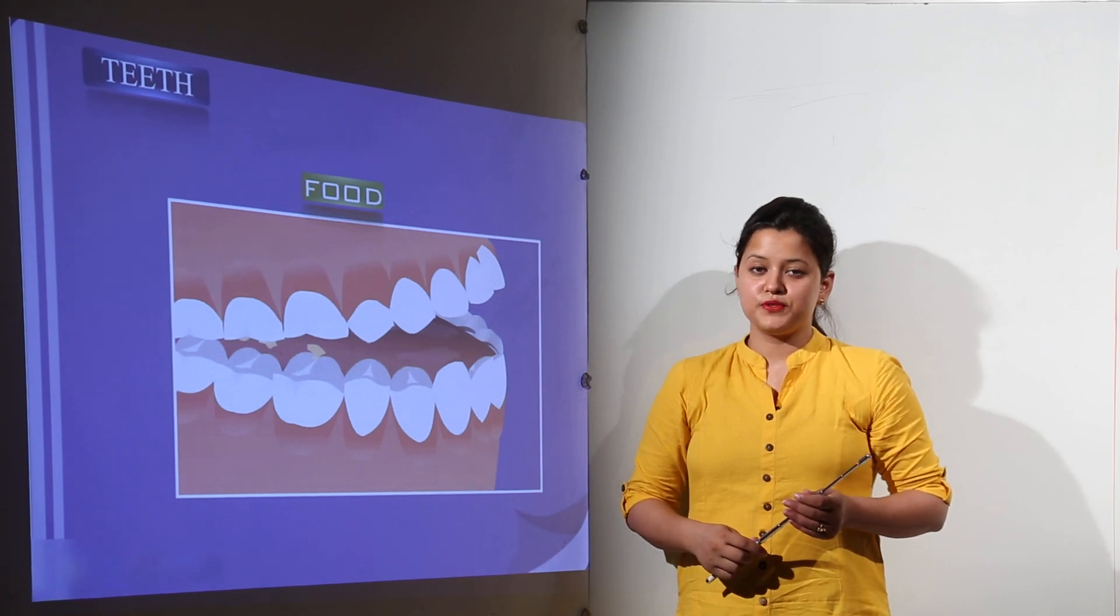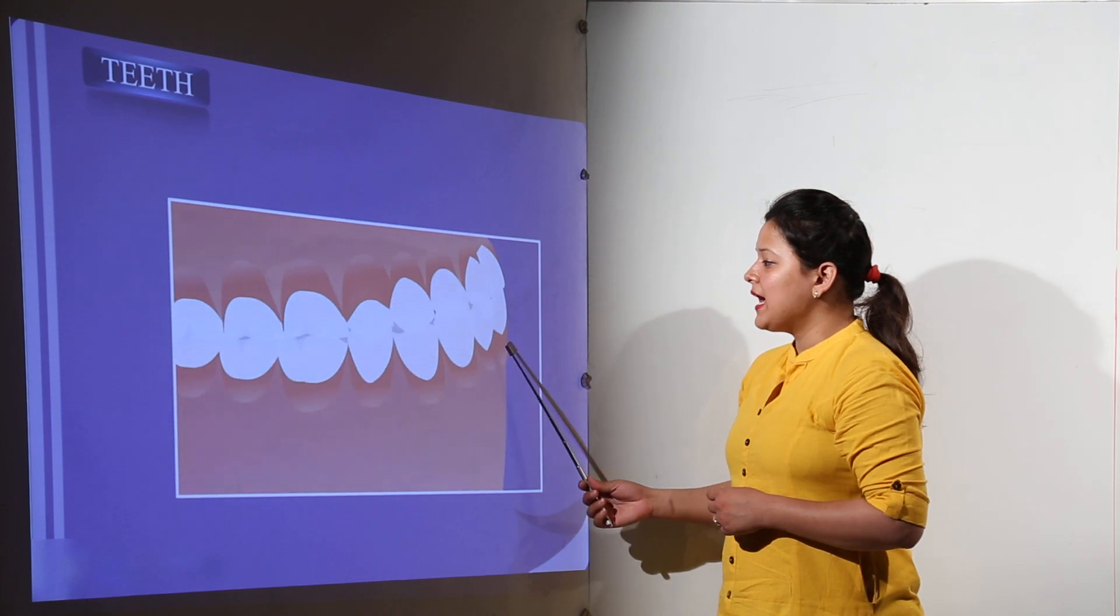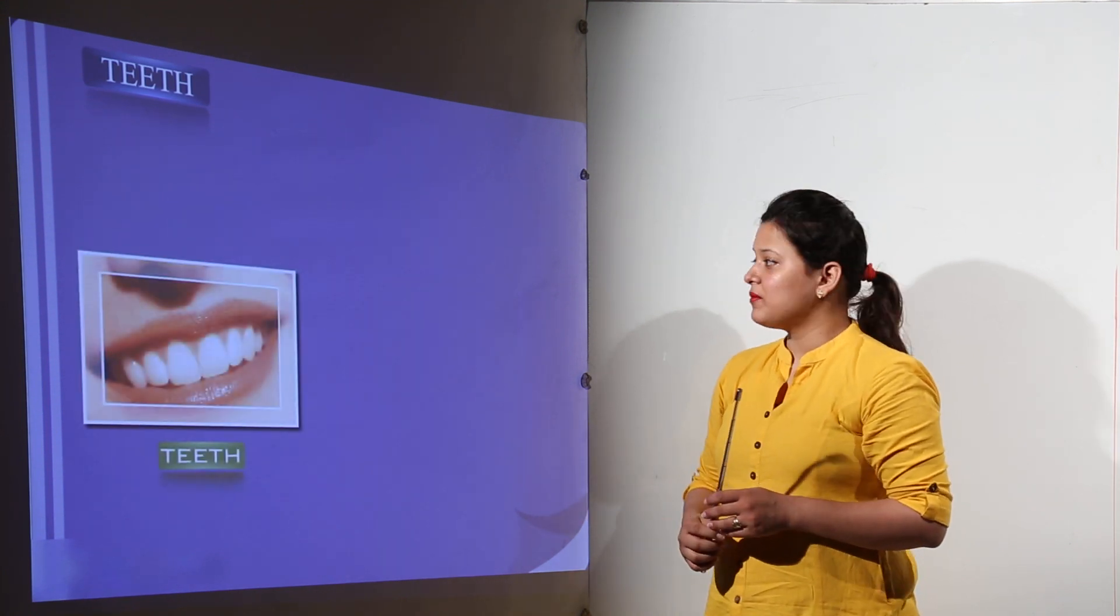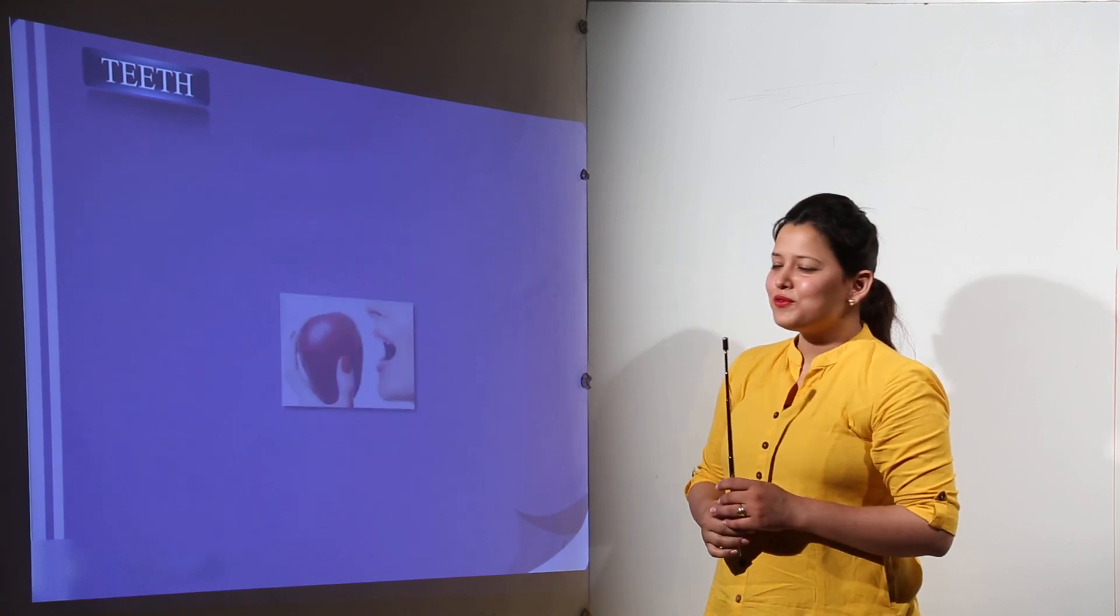Teeth and microbes. Now the teeth help us in chewing the food and it helps us to digest it also. So the teeth are acting like the mixer and grinder works for the food.